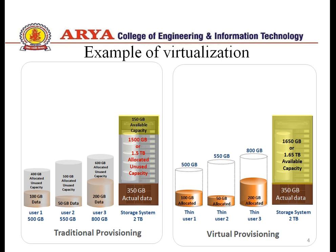अब virtual provisioning देखते हैं — इसमें user 1, user 2, और user 3 को same space allocated है (500 GB, 550 GB, 800 GB), लेकिन इन्होंने केवल 150 और 200 GB ही use किया हुआ है। Remaining 1650 GB का space खाली है। अगर कोई और user cloud vendor से space माँगे, तो cloud vendor इस unused space को दूसरे users को easily available करवा सकता है। This is the main benefit of virtualization.